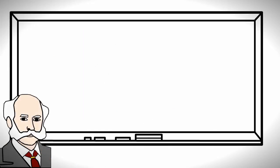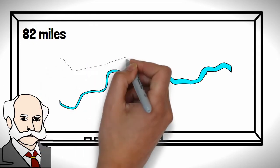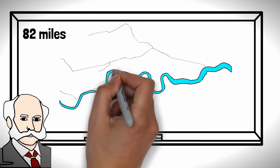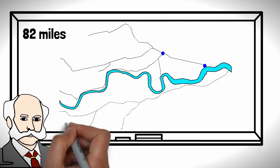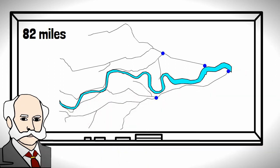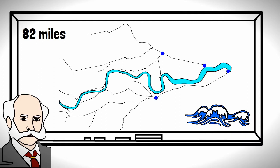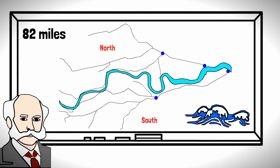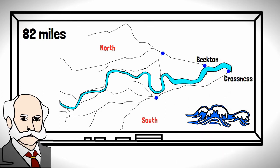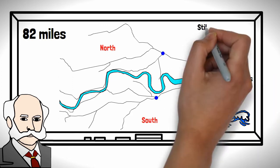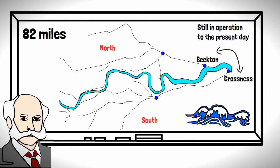Bazalgette's design was to construct a network of 82 miles of intercepting sewers, which would collect wastewater from existing sewers, moving it eastwards and further downstream of the River Thames, where it could be discharged with the outgoing tide. The network would cater for areas north and south of the river, with the northern sewers outfallen at Becton Works and the southern sewers outfallen at Crossness, with both treatment works still in operation to the present day.